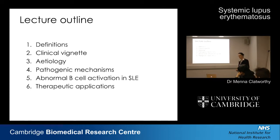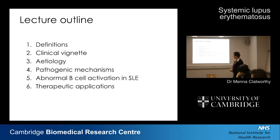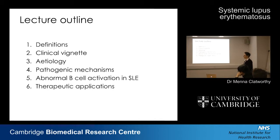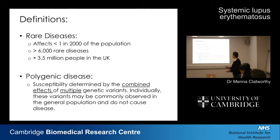Then I'll talk about pathogenic mechanisms and particularly focus on how mouse models have allowed us to define some aspects of the pathogenesis, then talk about abnormal B-cell activation, and finally how we've used some of the information from mouse models to define new therapeutic options for patients with lupus.